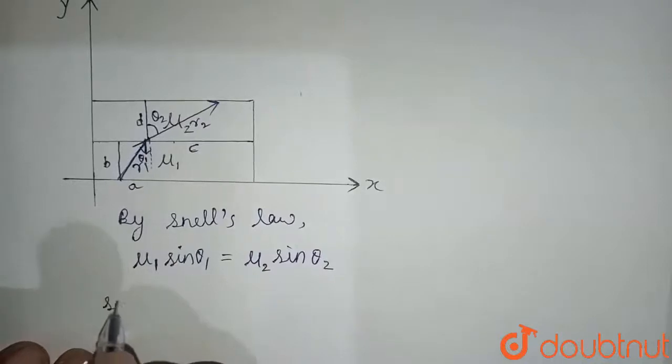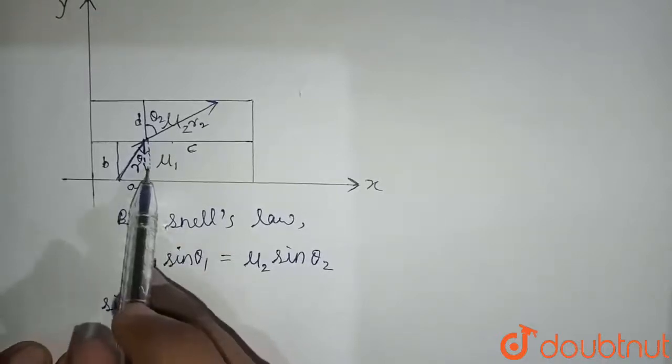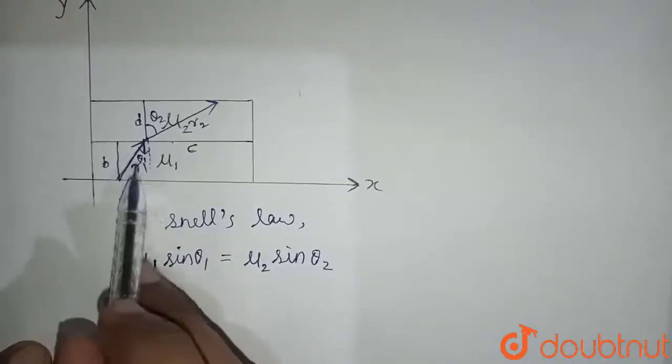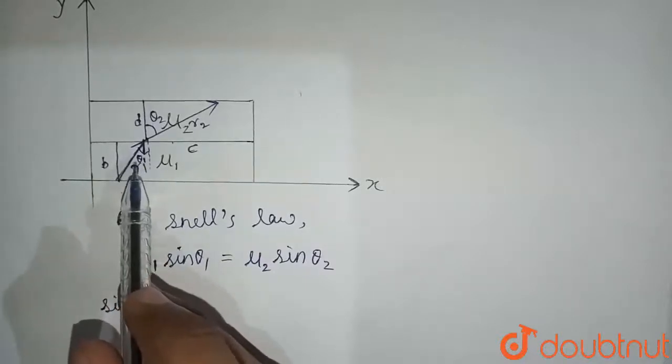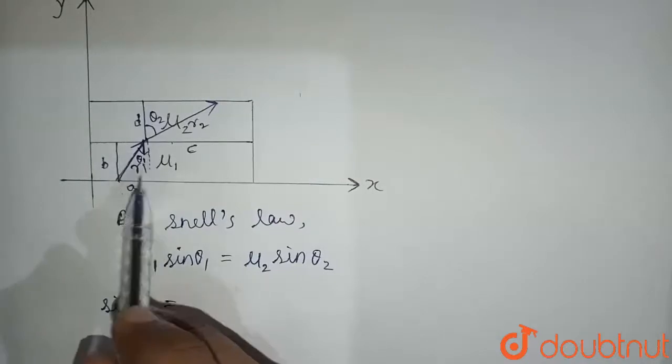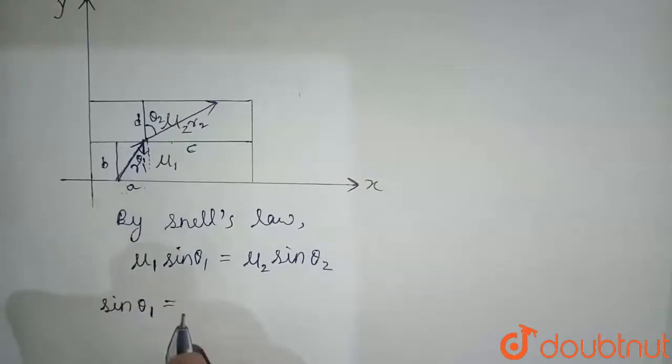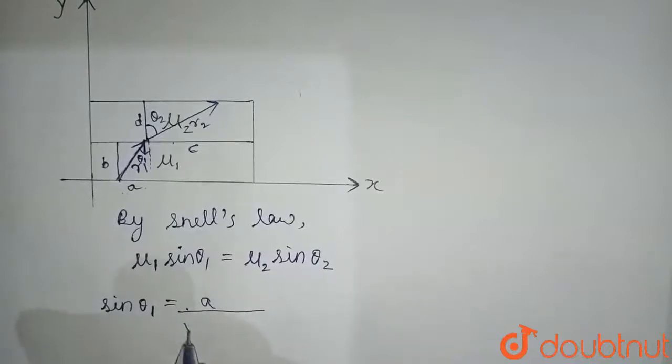So sin θ₁: the value of sine θ is perpendicular upon hypotenuse. Here the perpendicular is a, and using the Pythagorean theorem, the hypotenuse equals the square root of base squared plus perpendicular squared. So sin θ₁ = a/√(a² + b²).